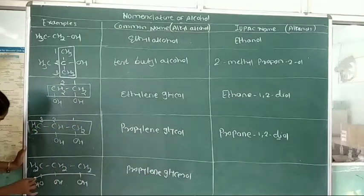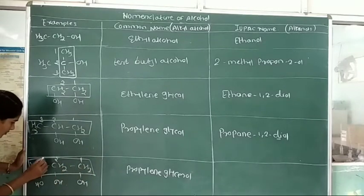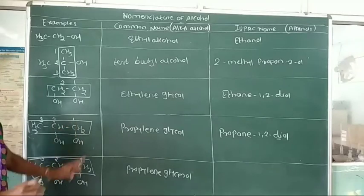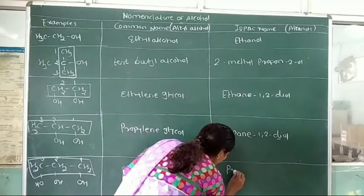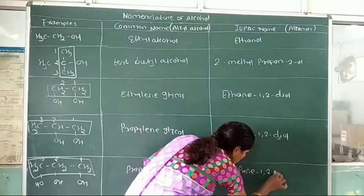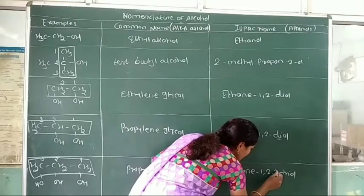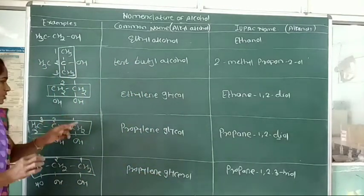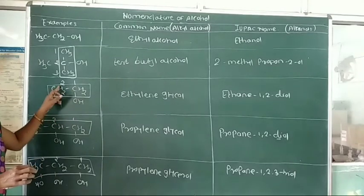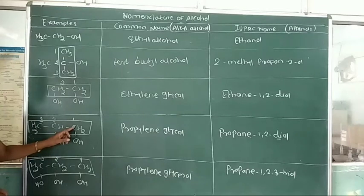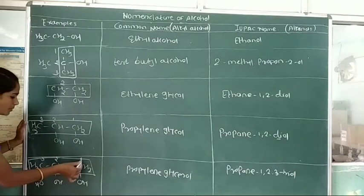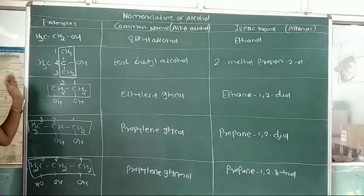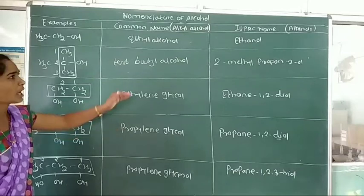In the IUPAC system, select the longest continuous chain and number it 1, 2, 3. Here 3 hydroxy groups are attached to the carbon atoms, so we use the prefix 'tri'. With 3 carbon atoms that is propane, the 3 hydroxy groups are attached to carbon numbers 1, 2, and 3. Therefore the IUPAC name is propane-1,2,3-triol. These are some examples of polyhydric alcohols with their common name and IUPAC name.